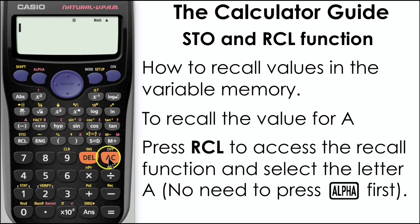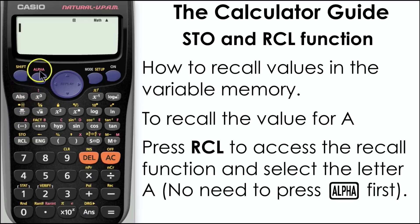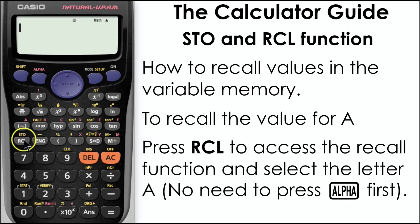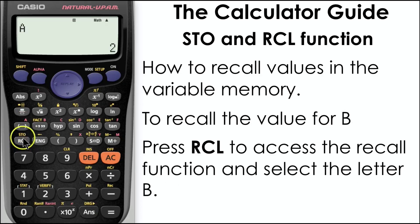If I want to recall any of my memorised values, all I need to do is press the recall function. I don't need to press alpha again with this. So if I press recall and then A, I get the value stored in there: 2. Recall B gives the value 10.